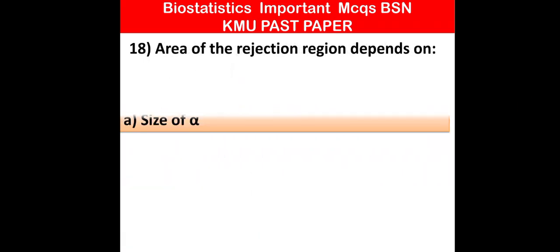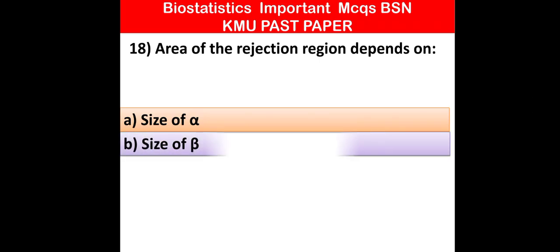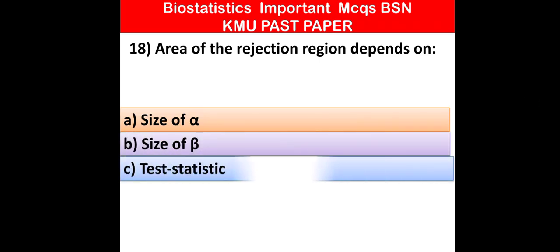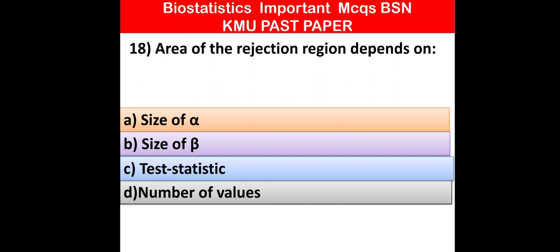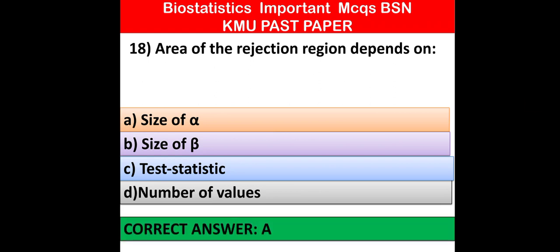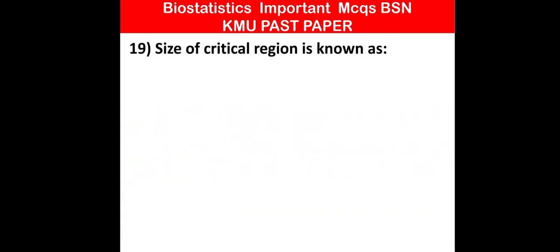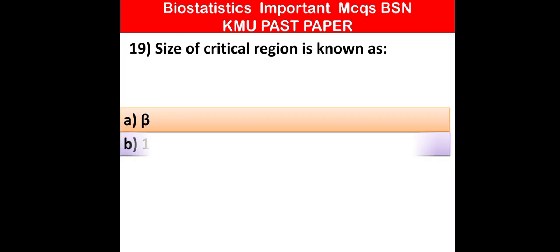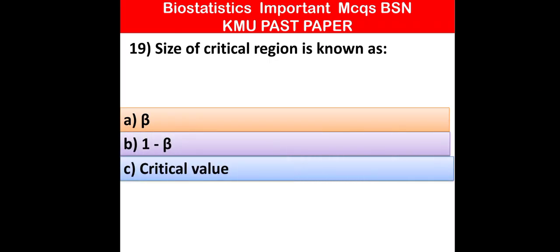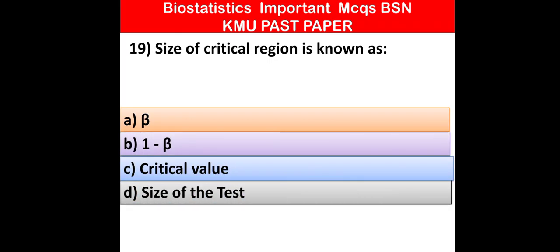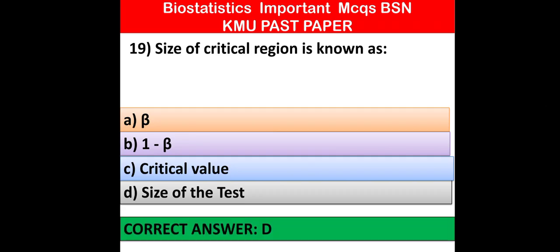MCQ number 18: The area of the rejection region depends on — size of alpha, size of beta, test statistic, or number of videos. Option A is correct: size of alpha. MCQ number 19: The size of the critical region is also known as — beta, 1 minus beta, critical value, or size of the test. Option D is correct: size of the test.